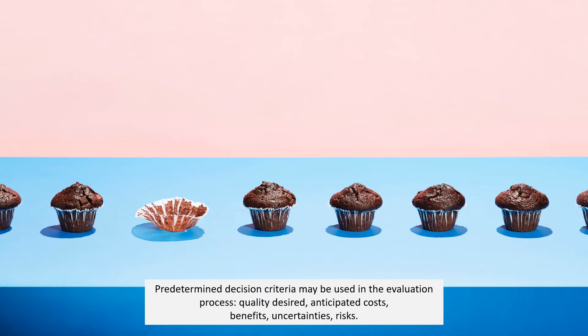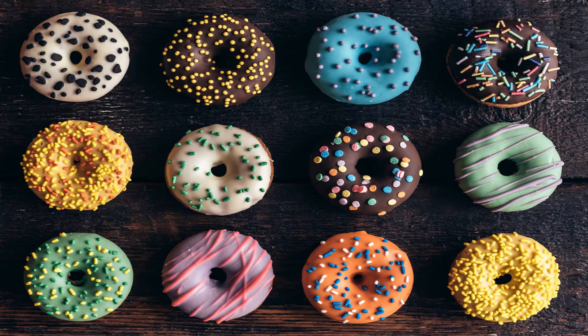For example, cupcakes have pros — they are tasty and easy to produce — but the con is that they are very common and many people already sell them. For donuts, the pro is that you can create varieties of toppings, but the con is that many competitors already sell the same type of product with similar varieties. So you evaluate each option against your criteria before deciding.